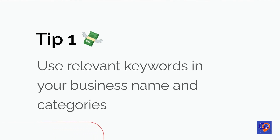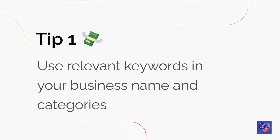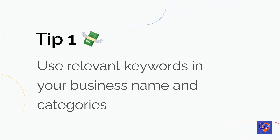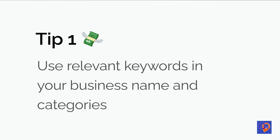Tip 1: Use relevant keywords in your business name and categories. Including relevant keywords in your business name and categories is an effective way to optimize your Google My Business profile for search. If you have legal documents that prove that your business has the right to use certain keywords in its name, make sure to include them in your profile. Additionally, be sure to choose the right primary and additional categories for your business. These categories should accurately reflect the products and services you offer and should include relevant keywords.